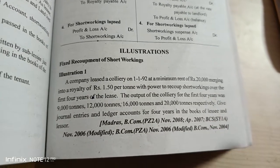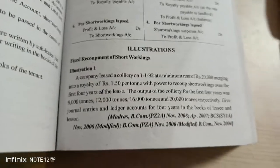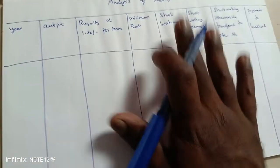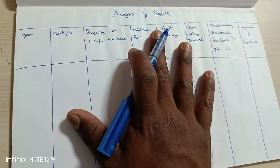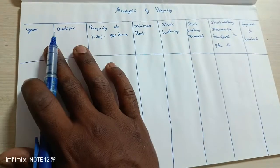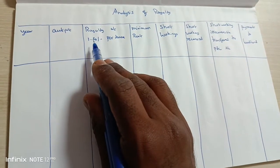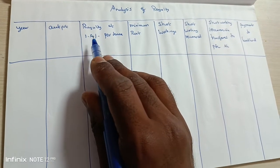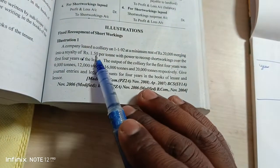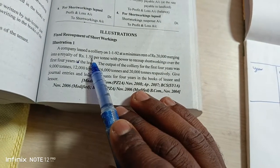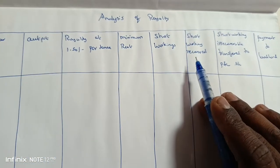In the previous video we covered the royalty analysis table. I already have the royalty analysis table prepared. This is how the analysis table will look: Year, Output, Royalty. The royalty rate in this question is Rs. 1.50 per ton. Then we have columns for minimum rent, short working, short working recoup, P&L transfer account, and payment to landlord.